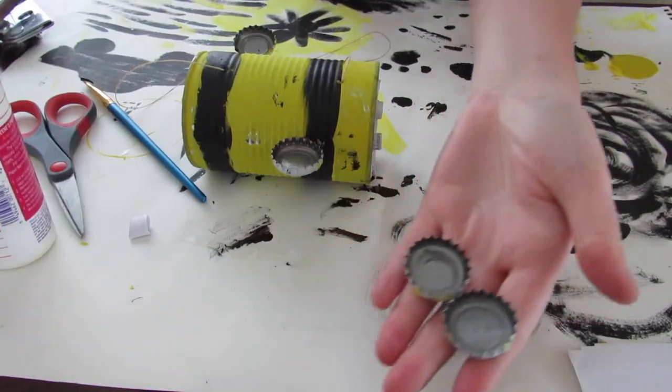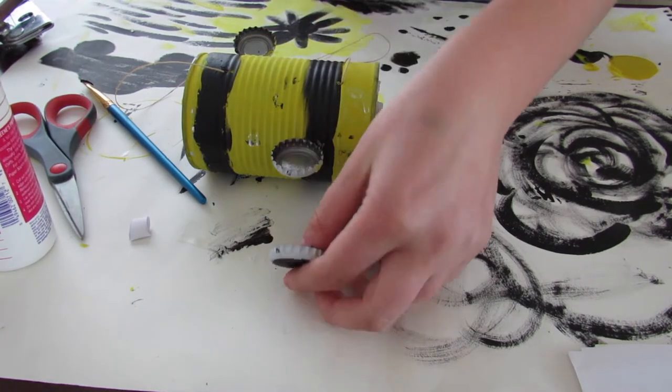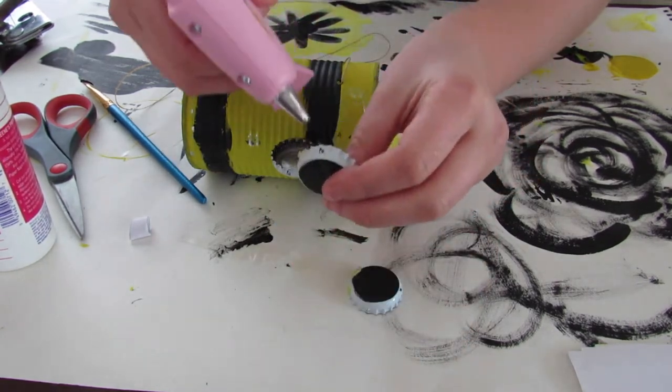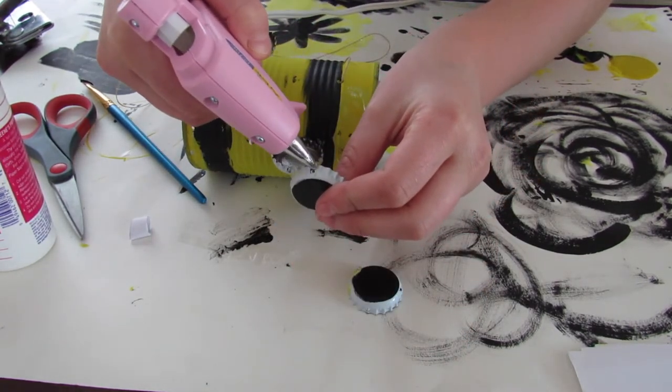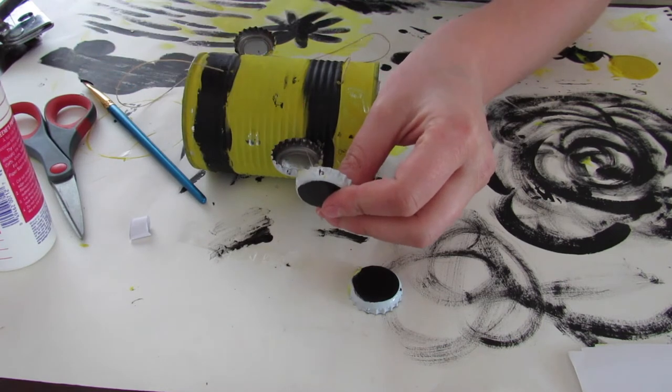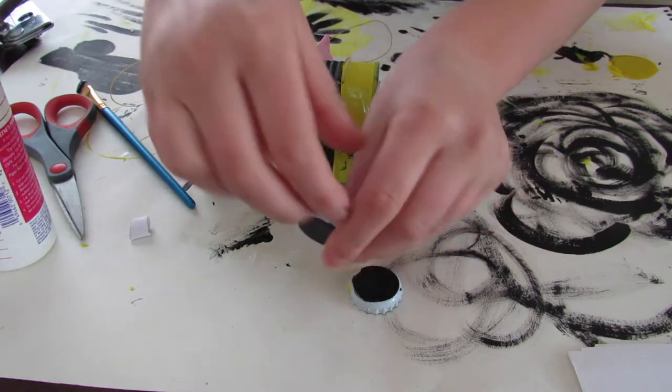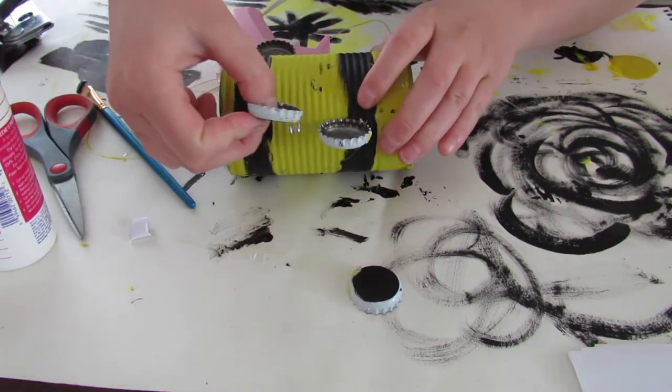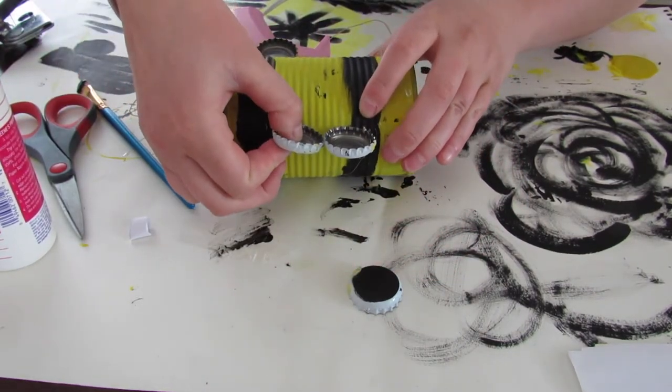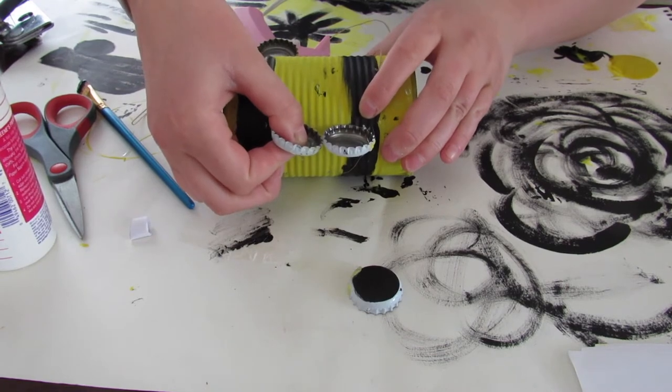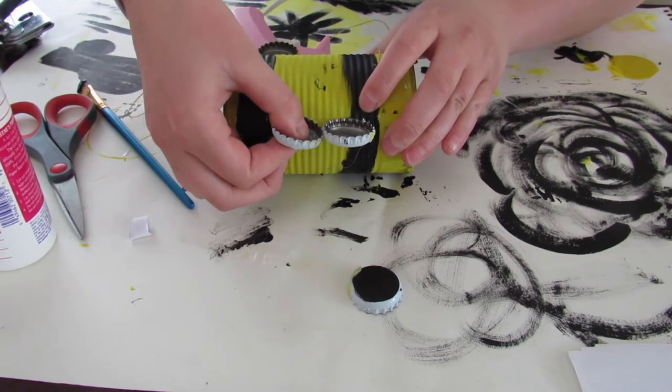Next is that you're going to take those bottle caps. And as you can see, I already have two stuck on, but we're going to have two on each side, kind of creating two bumblebee wings. So take your hot glue, put a little dot on the side of your bottle cap and stick it right onto your can, kind of aiming for the middle of your can.